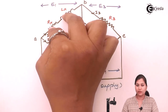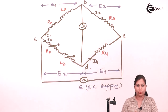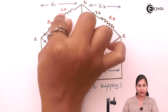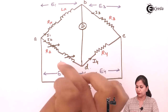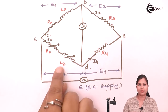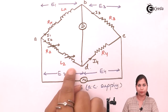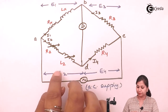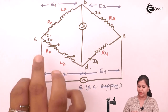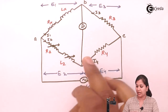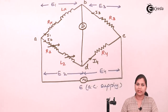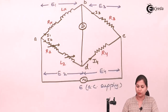The values of these two are unknown to us. We want to find out the value of this unknown inductance in terms of the known inductance L2. L2 is a standard inductance, R2 is also a standard resistance, and R3 and R4 are also the known non-inductive resistances.